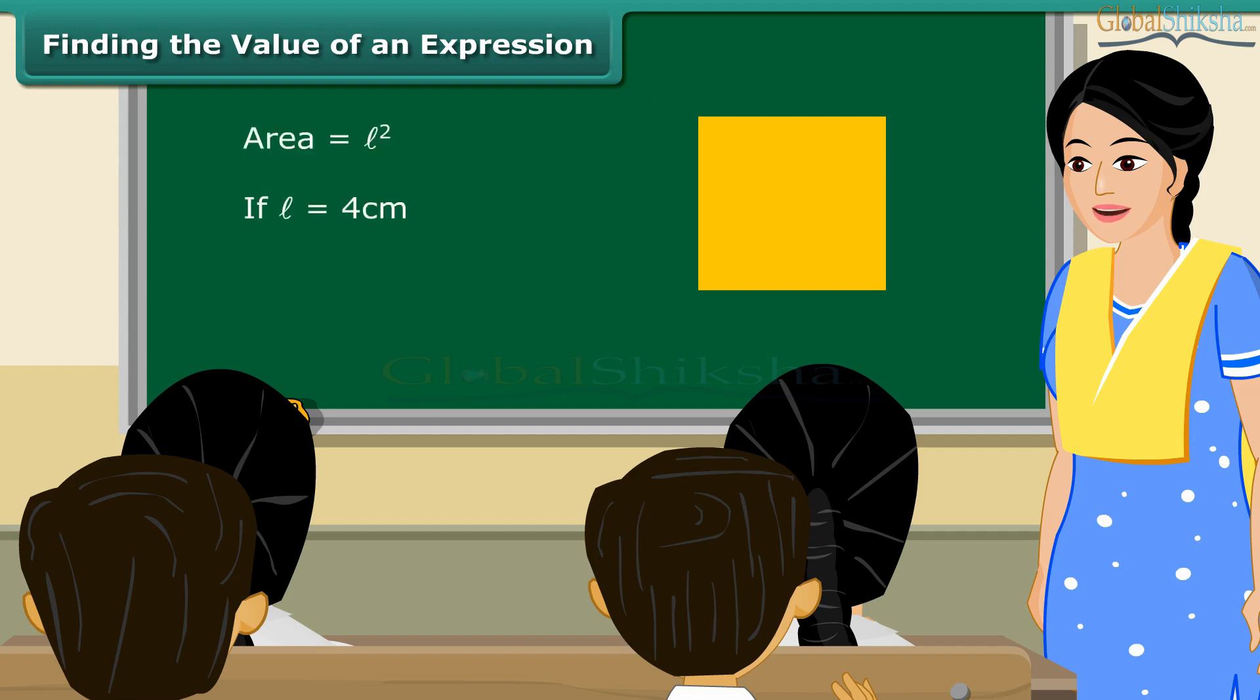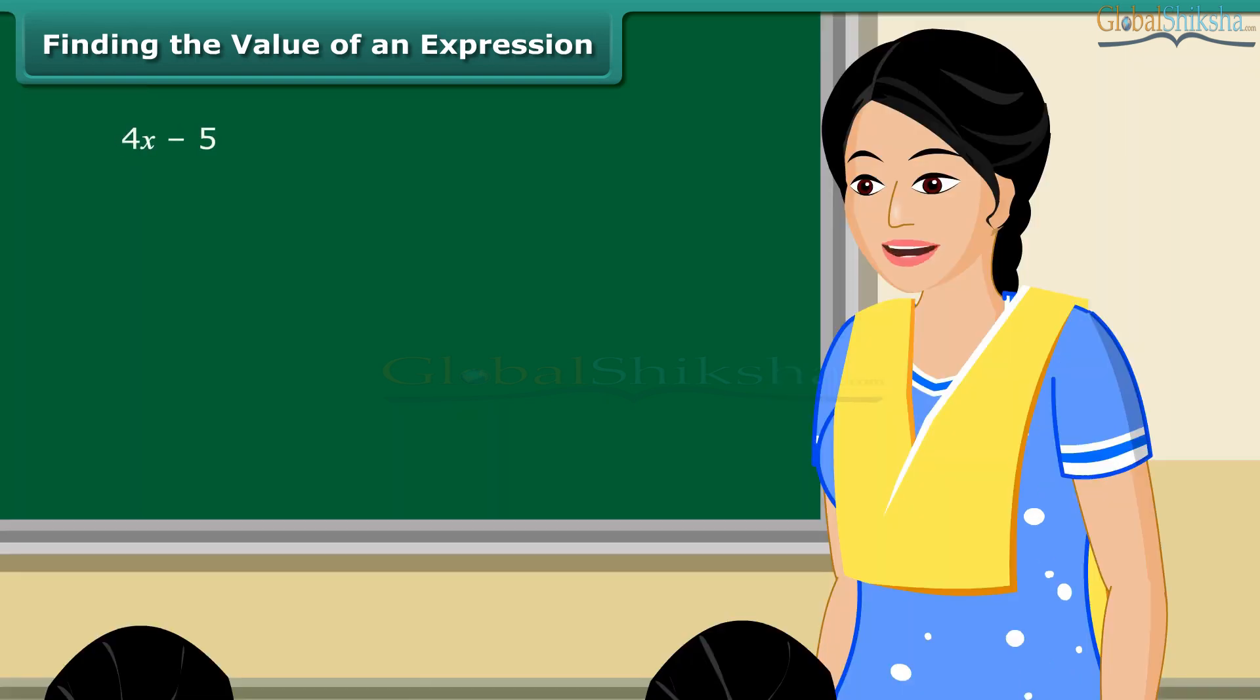See this square. It has an area equal to l². If the value of l is equal to 4 cm, then what would be the area of this square? That's right, it would be 16 cm². So, children, there are a number of situations in which we need to find the value of an expression. Consider the expression 4x - 5. If the value of x is equal to 4, then the given algebraic expression is equal to 4 × 4 - 5, which is equal to 16 - 5, that is 11. Similarly, if m is equal to -2, then value of the expression m² - 2 will be equal to 2.